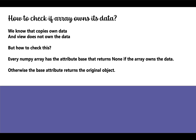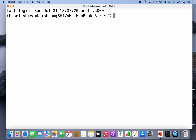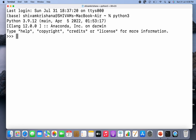Now let's move on to our next topic: how to check if an array owns its data. This is basically a method of checking whether a given element is a copy or a view. We know that copies own data and views do not own data. Every NumPy array has an attribute called base that returns None if the array owns the data; otherwise, the base attribute returns the original object. Now let's take an example and understand it through code. I'm going to write python3 and hit enter, then import numpy as np.